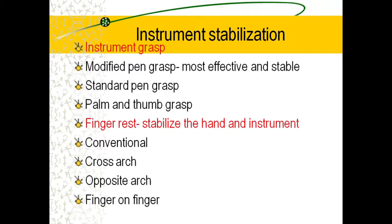Instrument stabilization includes instrument grasp and finger rest. The modified pen grasp is the most effective and stable grasp — it creates a tripod effect. Others include the standard pen grasp and palm and thumb grasp. Finger rest is used to stabilize the hand and instrument during periodontal procedures such as scaling and root planing. Types of finger rest include conventional finger rest, cross arch finger rest, opposite arch finger rest, and finger on finger.